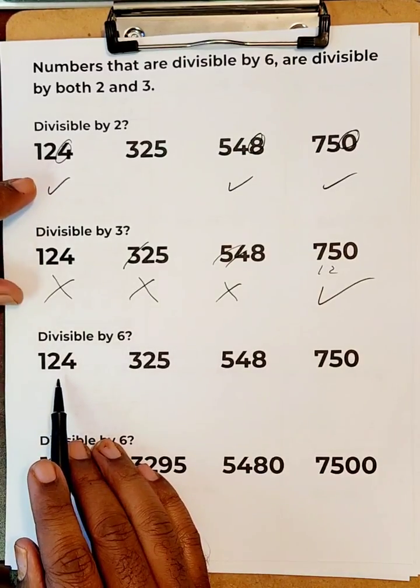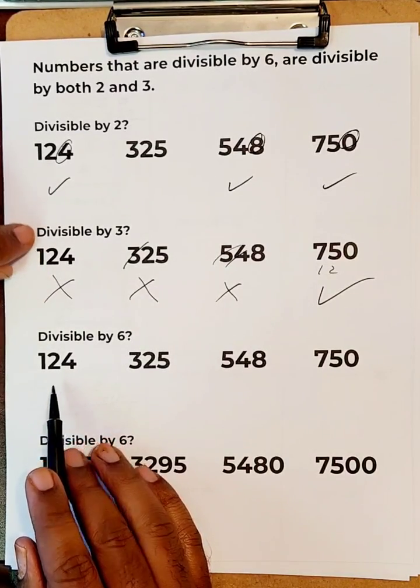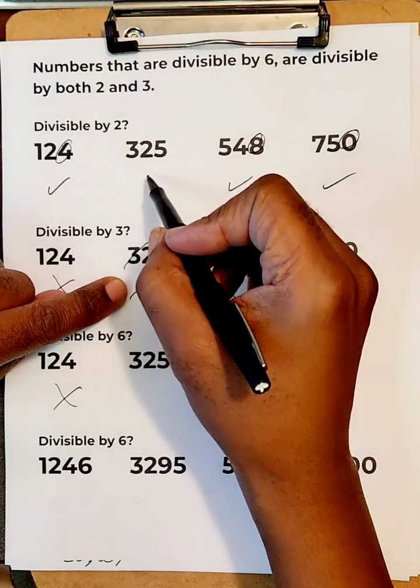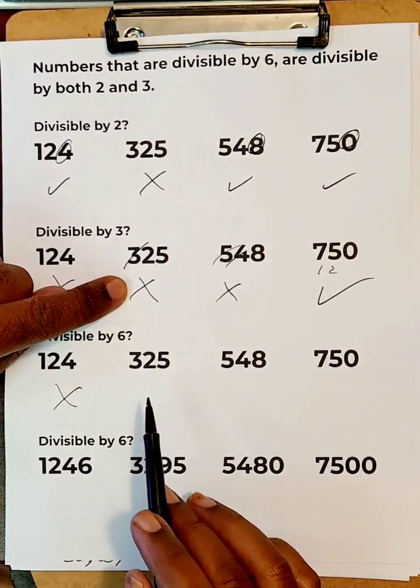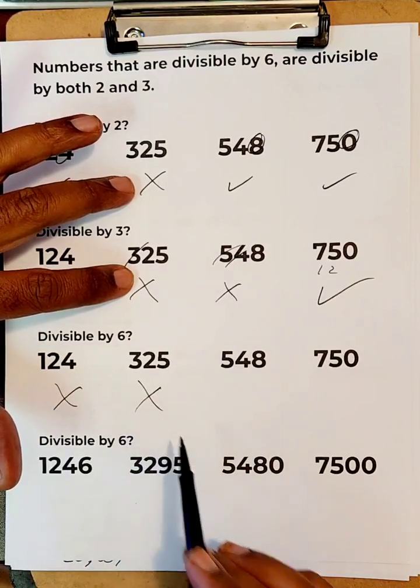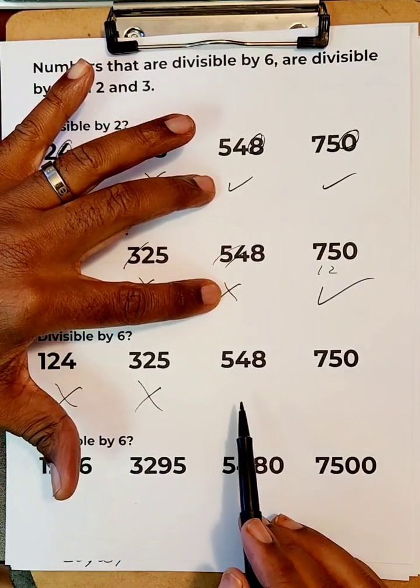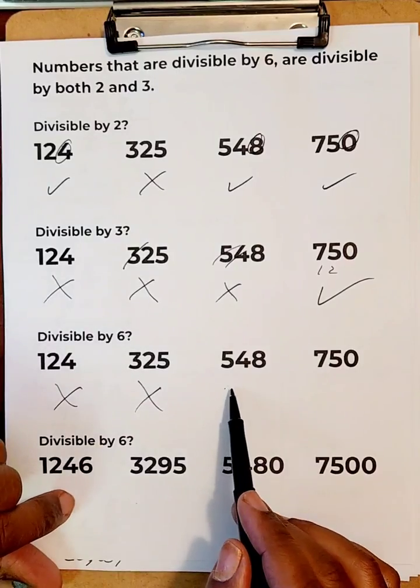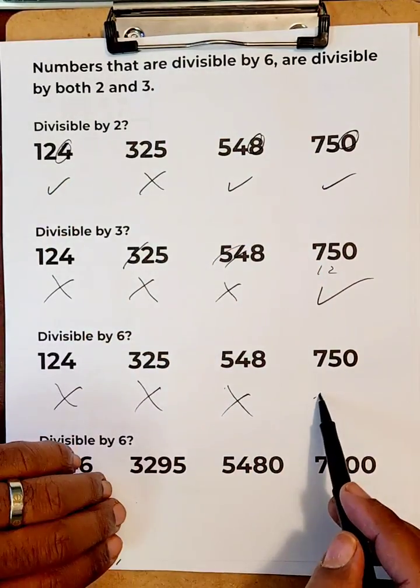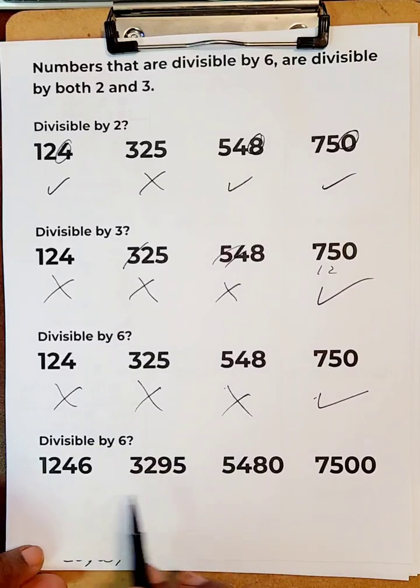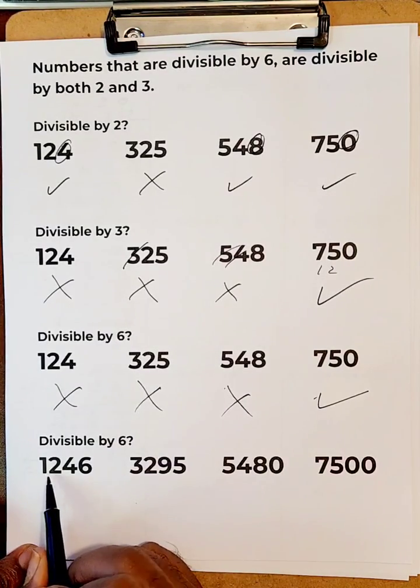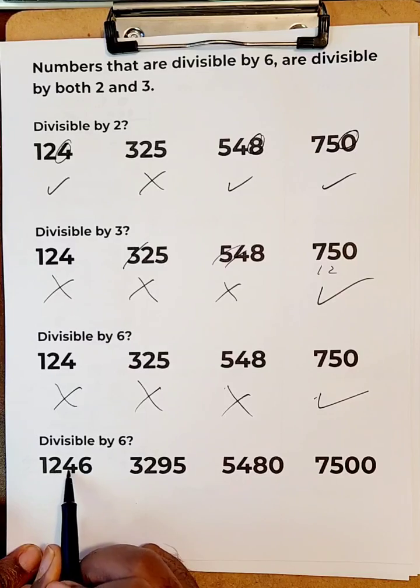Well, this cannot be divided by three, only two, so this does not work. This one can neither be divisible by two or three, so this does not work. This only is divisible by two, so this does not work. But this is divisible by two and three, so this works.